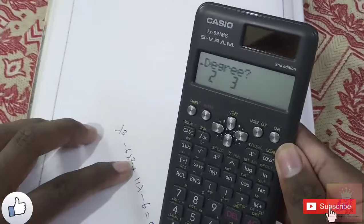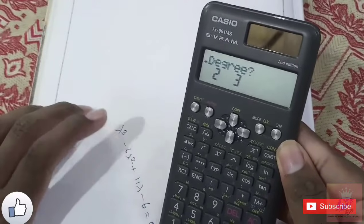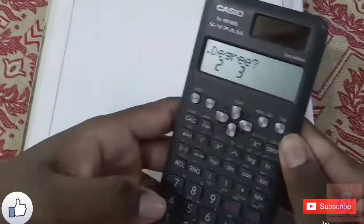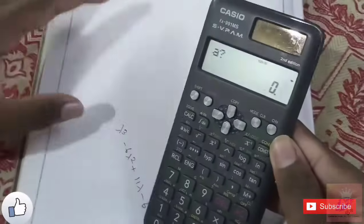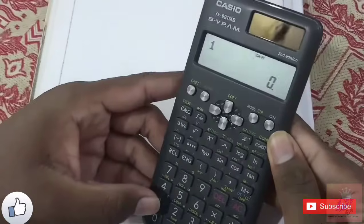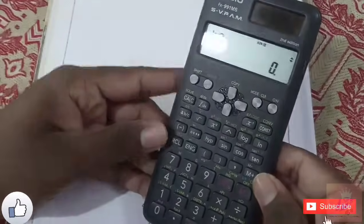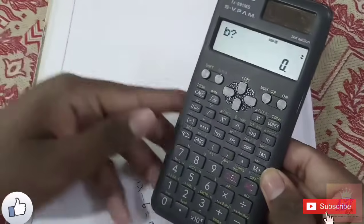Lambda cube, lambda square, and lambda. Since the highest power is 3, we select degree 3. The first coefficient, a, is the coefficient of lambda cube, which is 1. Then b equals the coefficient of lambda square, which is minus 6.